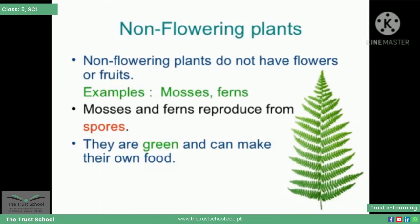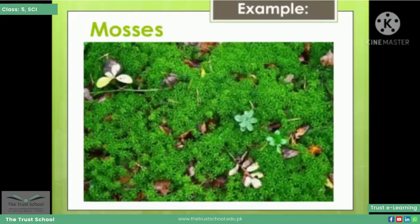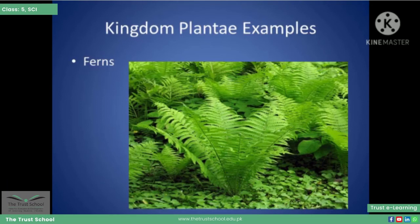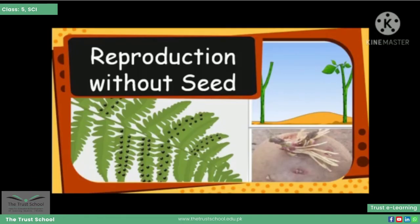Now we will discuss about non-flowering plants. As I have already told you, non-flowering plants do not have flowers or fruits. Examples include mosses and ferns. These are green in color. Since they do not have flowers or fruits, how do they reproduce? They make spores and transfer spores from one plant to another through the air. So they have no seeds and reproduce without seeds with the help of spores.